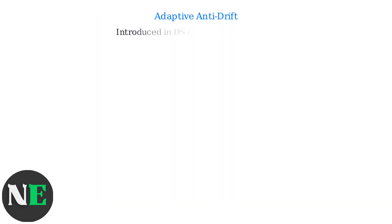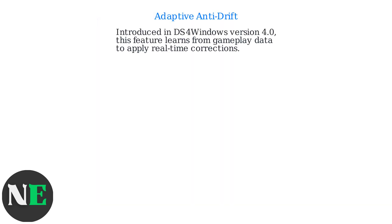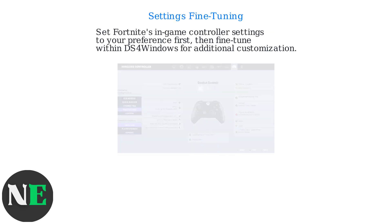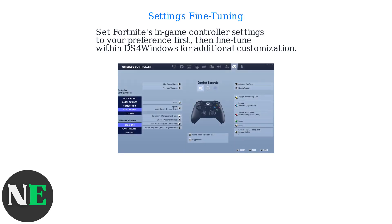Utilize the adaptive anti-drift feature, introduced in DS4 Windows version 4.0, which learns from gameplay data to apply real-time corrections. Set Fortnite's in-game controller settings to your preference first, then fine-tune within DS4 Windows for additional customization.